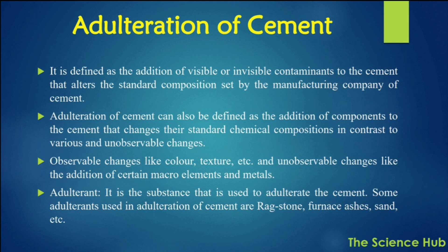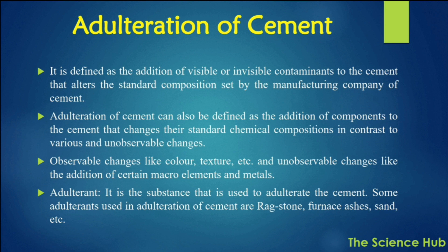Adulteration of cement is defined as the addition of visible or invisible contaminants to the cement that alter the standard composition set by the manufacturing company. Adulteration can cause observable changes like color and texture, and unobservable changes like the addition of certain macro elements and metals. Some adulterants used in cement include rag stone, furnace ashes, and sand.